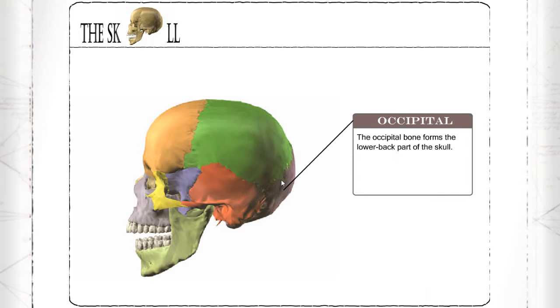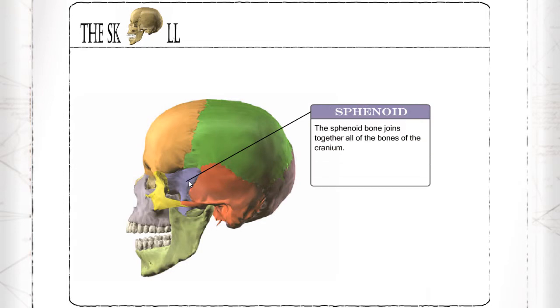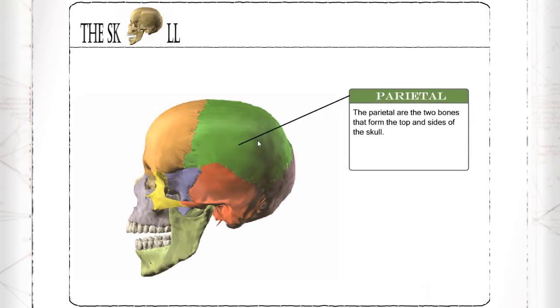Occipital: the occipital bone forms the lower back part of the skull. Sphenoid: the sphenoid bone joins together all of the bones of the cranium. Parietal: the parietal are the two bones that form the top and sides of the skull.